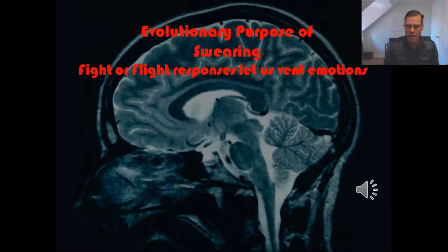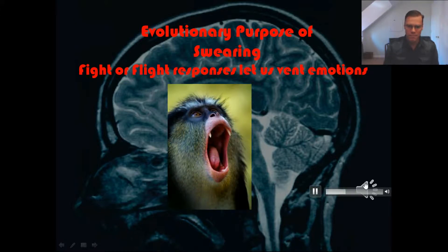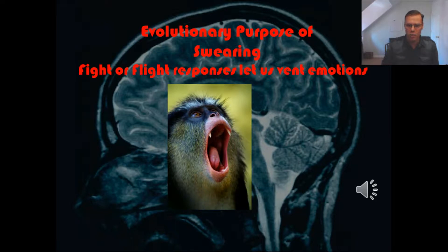The fight or flight response also lets us vent emotions. We see this in all mammals — they vocalize when they're upset about something, and humans do that as well. That's a very common use of taboo words: to vent those emotions, because they tap into the limbic system, our emotional brain.